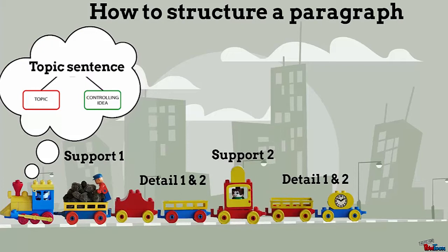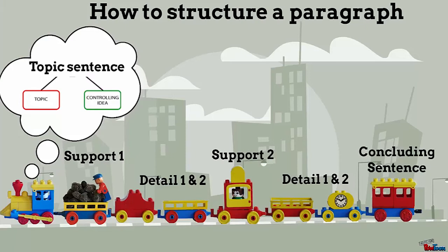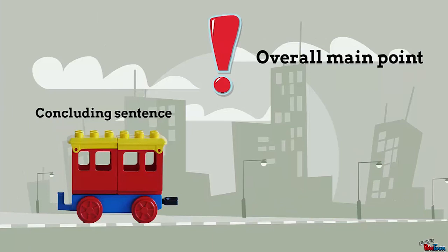Now your train is almost ready. All you need for completing it is the caboose. That's the last train car and it creates closure. In a paragraph, it's called a concluding sentence. This sentence summarizes your overall main point and it should contain some of the key words mentioned in your topic sentence.